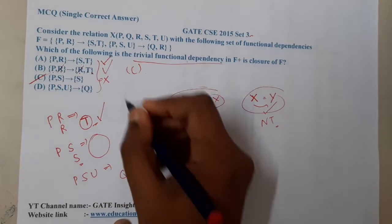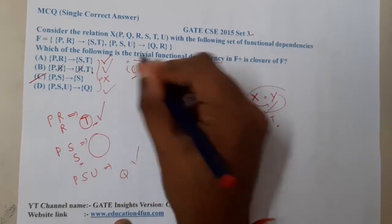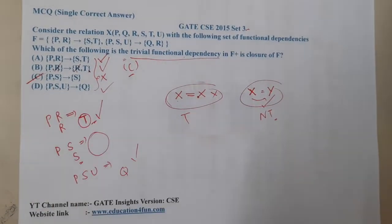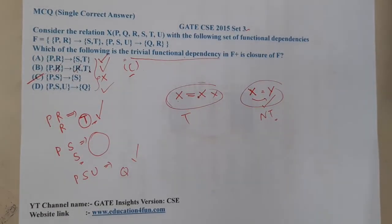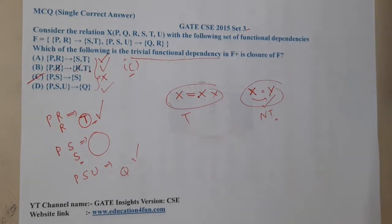And the next case is you will give P, S, U information and he will give Q information, absolutely good, right? So option C is the correct answer. It's a trivial thing because I'm giving you P and S value, you are just giving me S value.